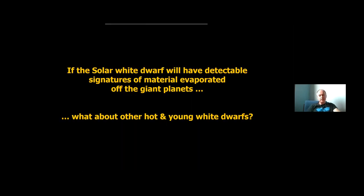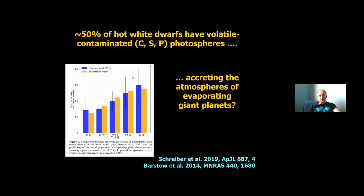Now, if this will happen to the sun, what about other hot white dwarfs? Well, we know that 50% of hot white dwarfs have volatile contaminated atmospheres. We see carbon, sulfur, phosphorus. And we did a quick planet population model and showed that the number and the evolution of those elements with cooling age is compatible with about half of those having giant planets.